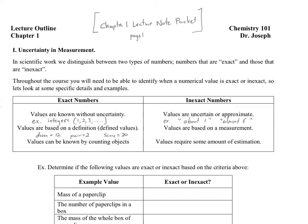A third category of exact numbers are those that can be obtained just by counting objects. You might say counting is a type of measurement and should lead to error, but we assume counting can be done in such a way as to eliminate all error. Whether or not that's truly the case is debatable, but we consider values obtained by counting objects to produce exact numbers. Examples include the number of eggs in a box, slices of bread in a package, or atoms counted in a region of space. Any value requiring estimation is considered inexact.